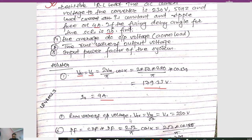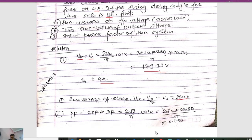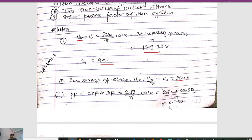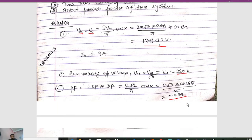The RMS value of output voltage VOR = Vm/√2, which equals the source voltage Vs = 230V directly. The power factor can be calculated as CDF × DF, or using the formula (2√2/π) × cos(alpha). With alpha = 30°, power factor = (2√2/π) × cos(30°) = 0.779.